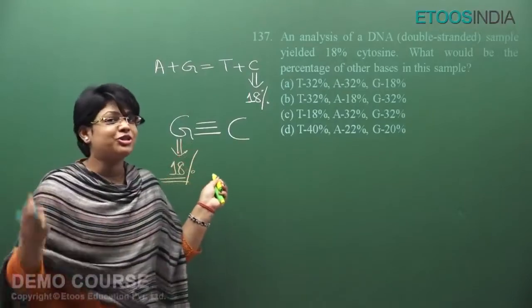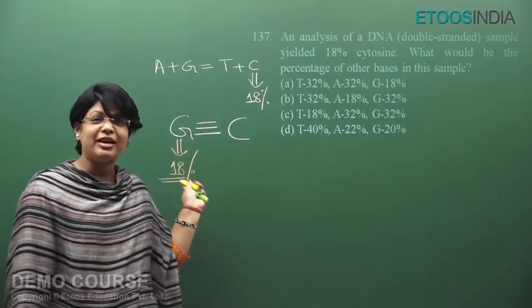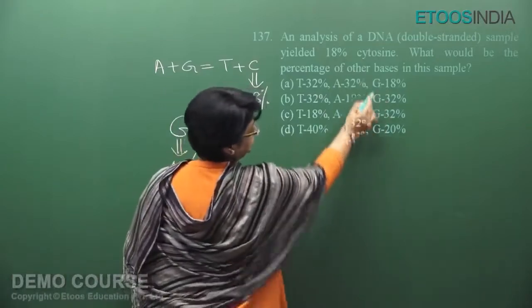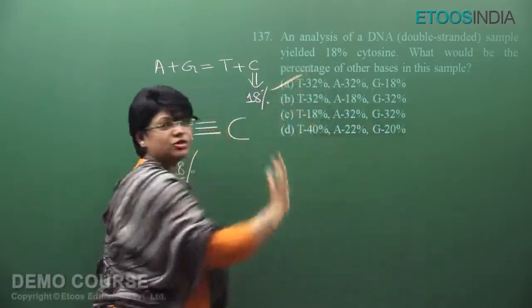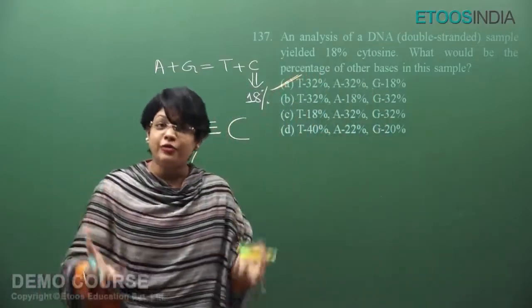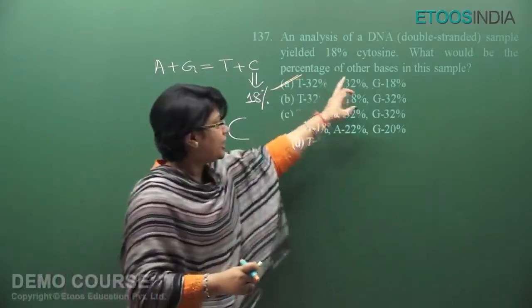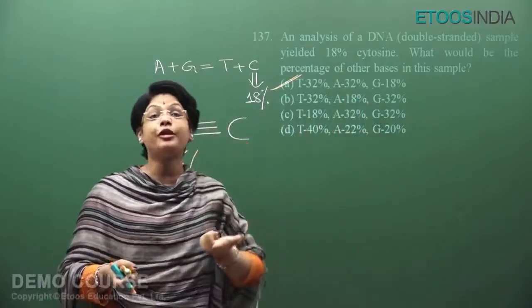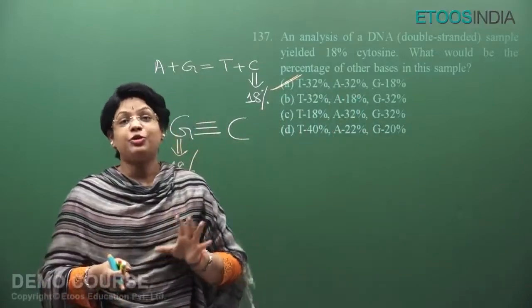Now you don't have to waste time; this is how you can save time. If guanine is 18%, then we need to calculate adenine and thymine.